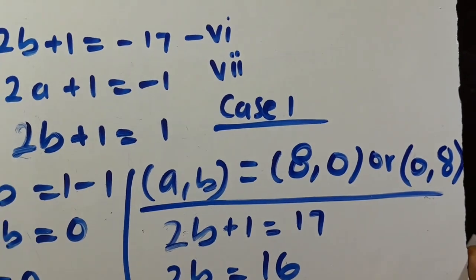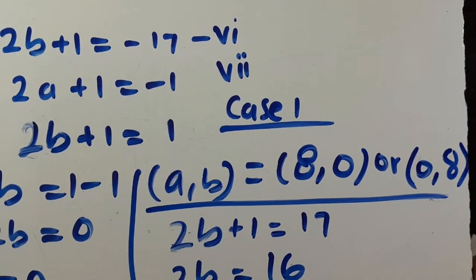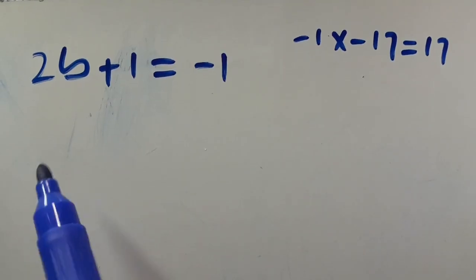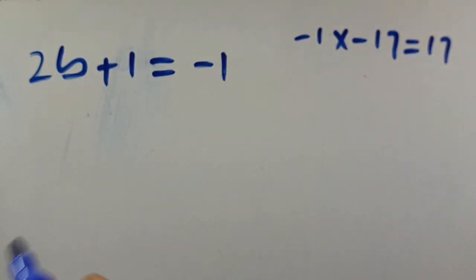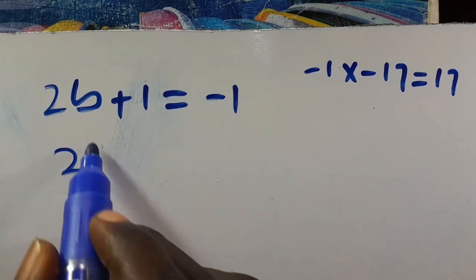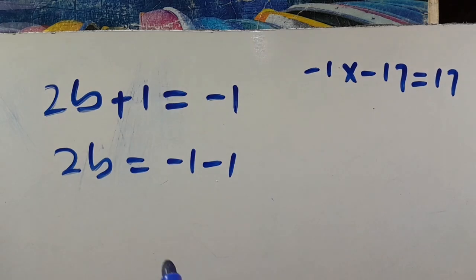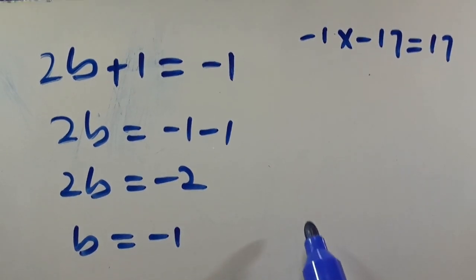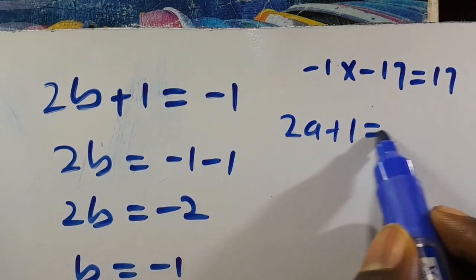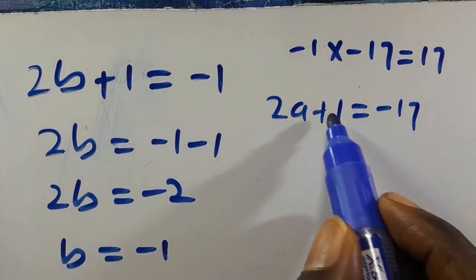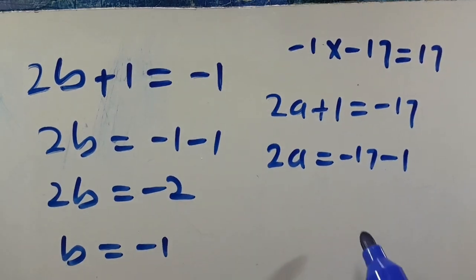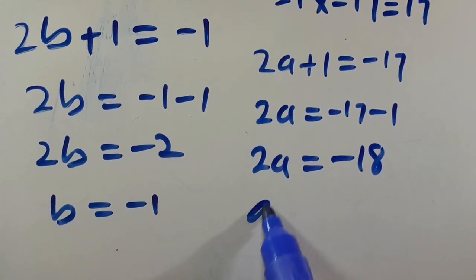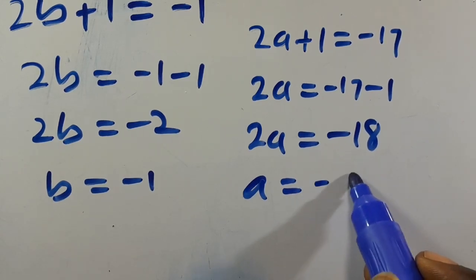Those were the positive integer cases. Now let's go along with negative integers. From 2b plus 1 equals minus 1, we get 2b equals minus 2, so b equals minus 1. Then from 2a plus 1 equals minus 17, we get 2a equals minus 18, so a equals minus 9.